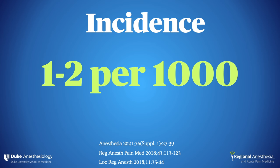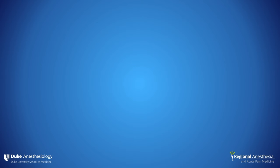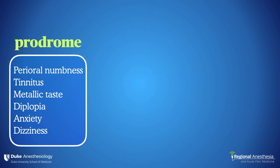Is this a rare complication? Maybe. Our best numbers suggest it happens in one to two per thousand nerve blocks — however, those are just the ones we know about from prospective registries or databases. There are no doubt several-fold more cases that go unreported, especially if the outcome is favorable.